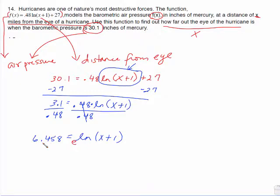Now to undo ln, this is where I do this little e to the on both sides. Because e to the ln, that's going to cancel out and all you get is x plus 1.